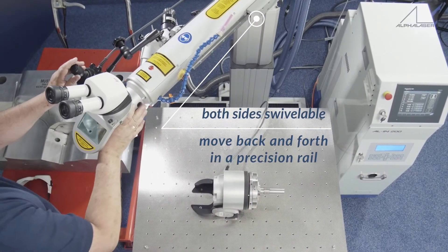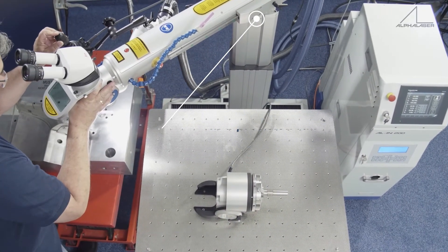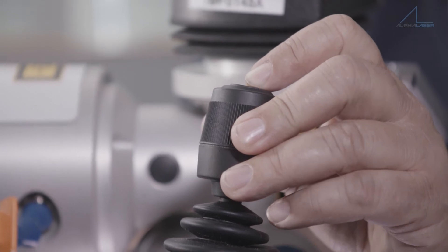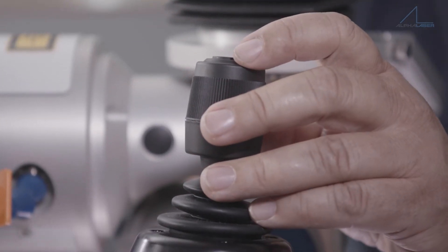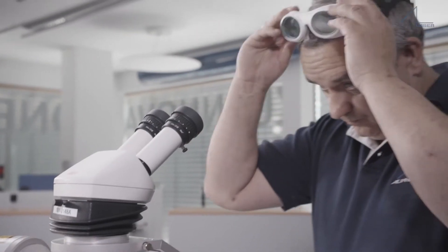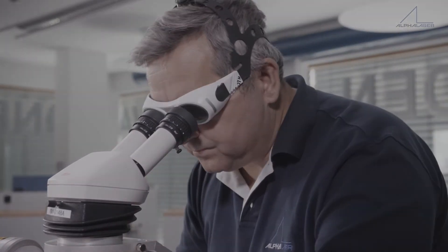The resonator can be swiveled to both sides, left or right, and may be moved back and forth in a precision rail. Thus, you can also weld large parts directly on the forklift or on the pallet.